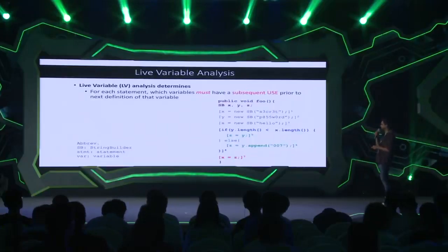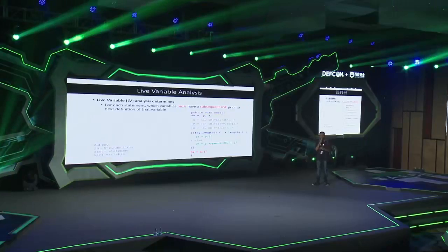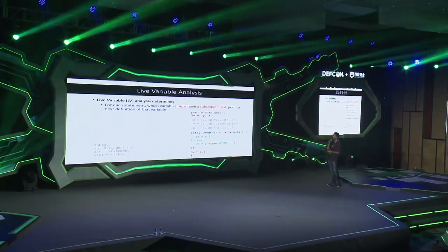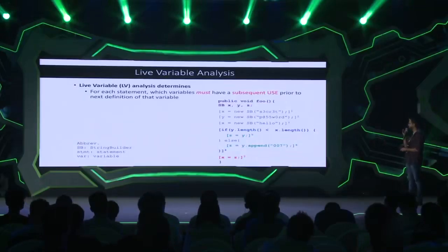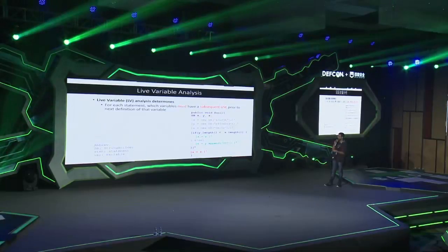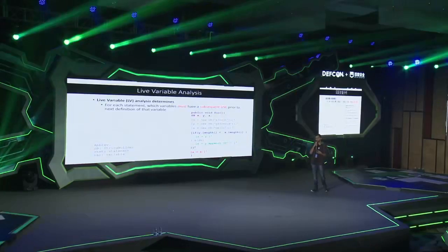Live variable analysis determines for each statement which variables must have a subsequent use prior to the next definition — exactly what we saw earlier with the definition-use diagram. In this code, the last usage point of variable x is statement 4, the last usage of y is statements 5 or 6 because they are two different branches in an if clause, and the last use of z is statement 7. This seems intuitive, but how do you determine it in an automated way?